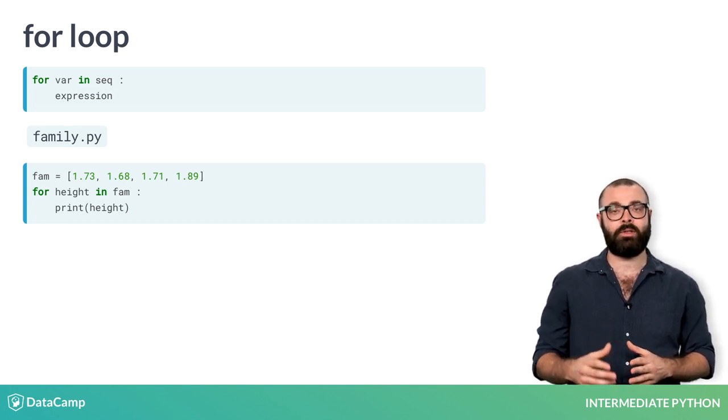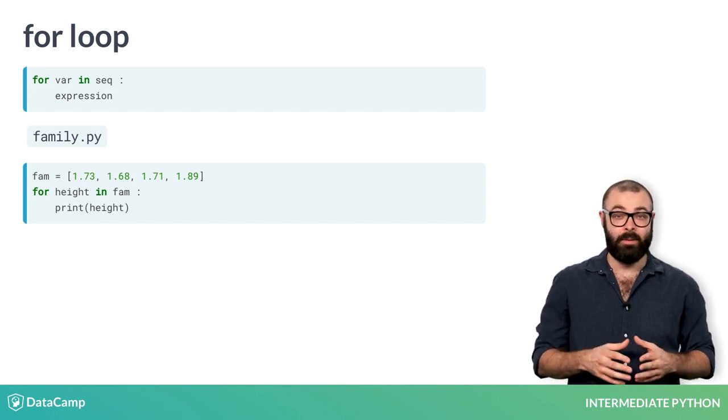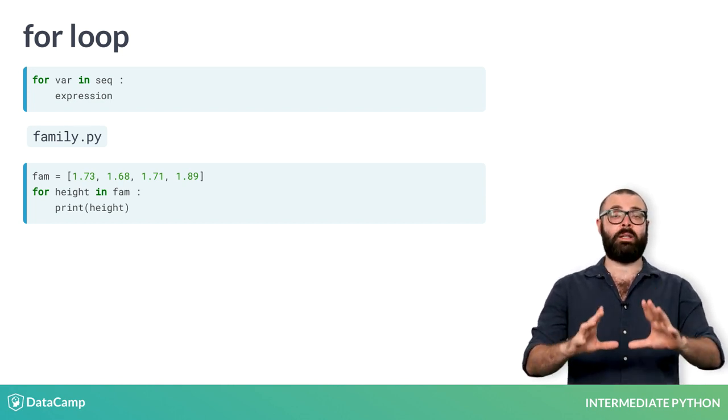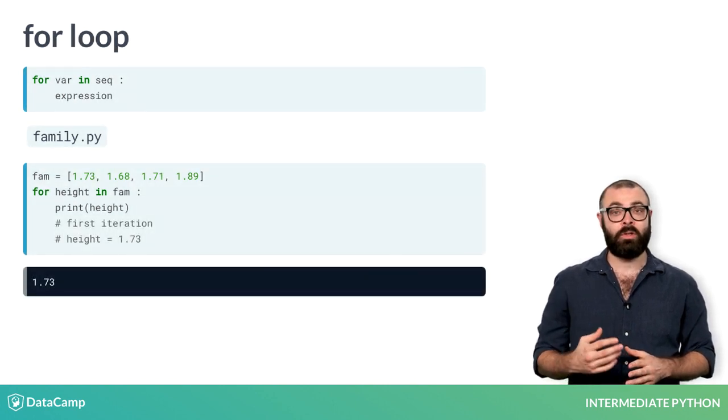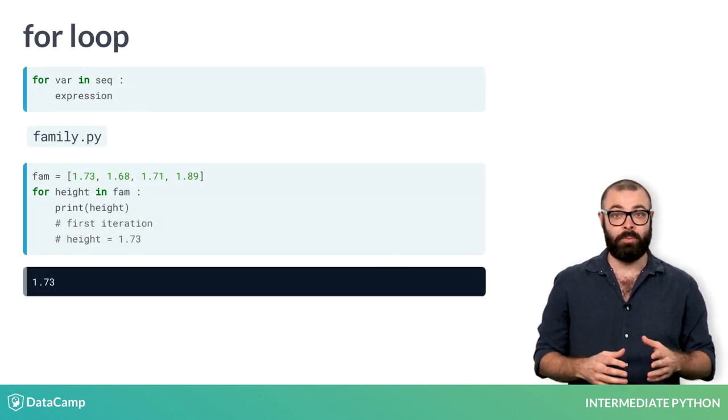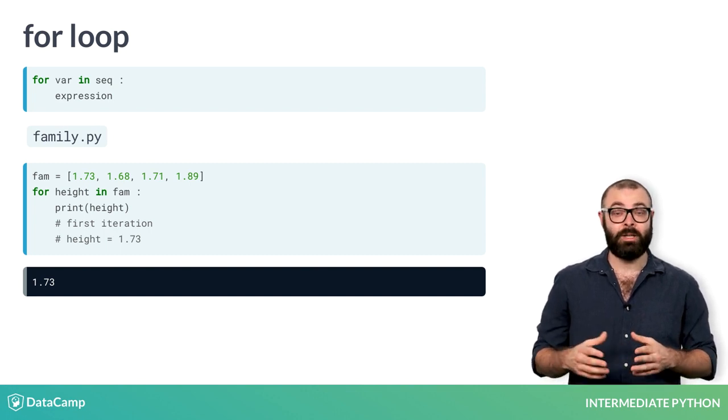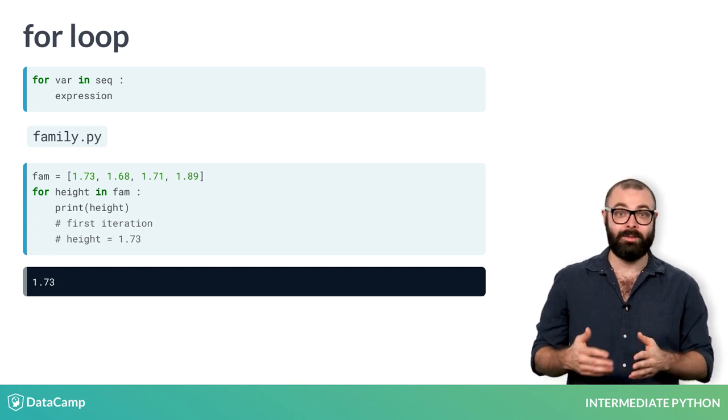When you run this script, Python encounters the for loop and evaluates the seek element, fam, in this case. It sees that it's a list containing four elements. Then the actual iteration starts. In the first run, Python stores the first element, so the float 1.73, in the variable height. Next, the expression print height is executed, printing out 1.73.